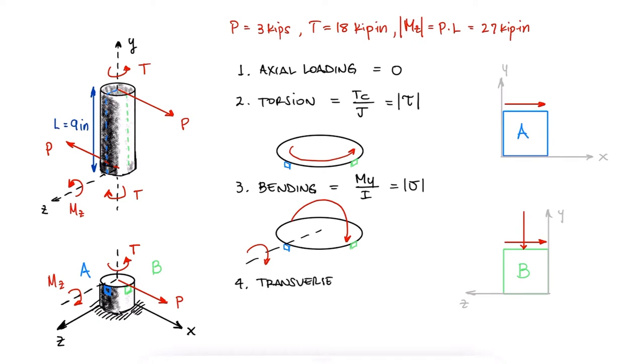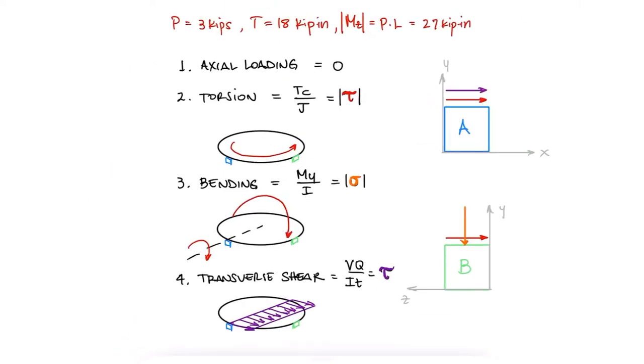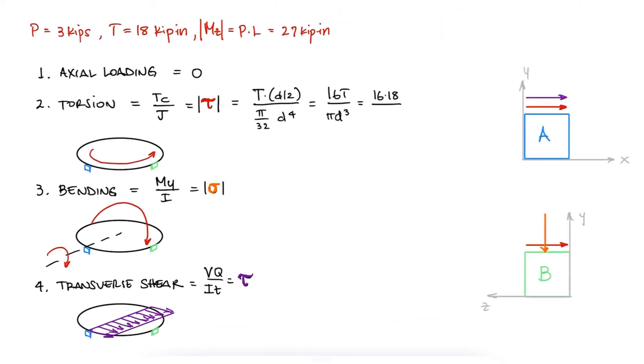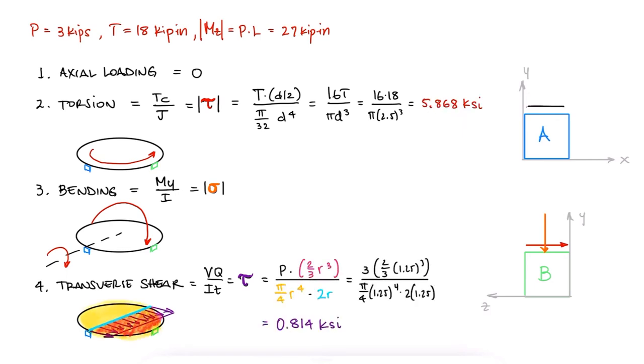And finally, the shear force P will cause a maximum shearing stress on the diameter perpendicular to that force and zero stress at B. With the values for the torsional shearing stress and the transverse shear stress, we find that stress element A is subjected to a shearing stress of 6.68 ksi.